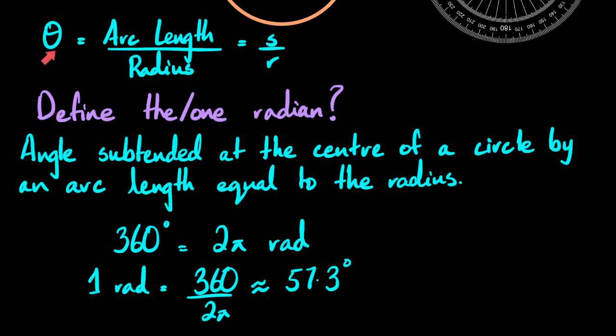So really, this theta, this angle in radians, does not have a unit. But just to clarify that we are using an angle, we use this word the radian with it. But strictly speaking, this is not a unit. So the radian is not really a unit.